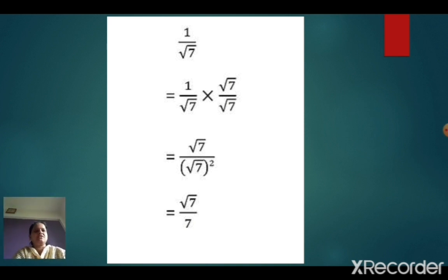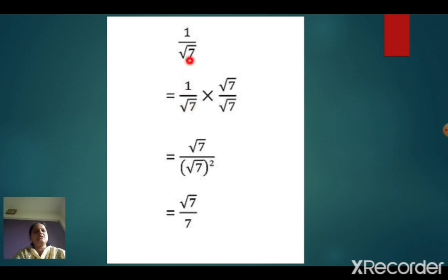Can you see here for the first sum? It is given as 1 by root 7. The denominator is root 7. We want to make the denominator a rational number. Here, as the denominator is root 7, I will multiply the numerator and denominator by the same denominator.